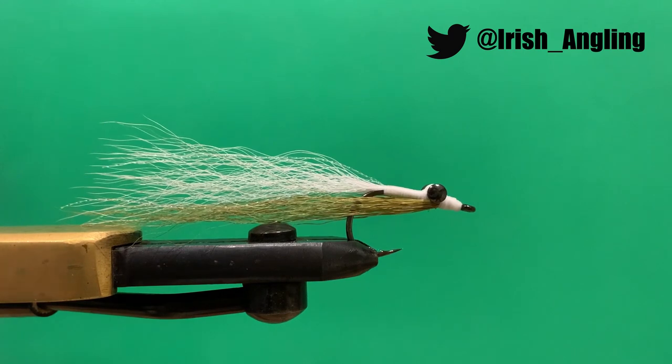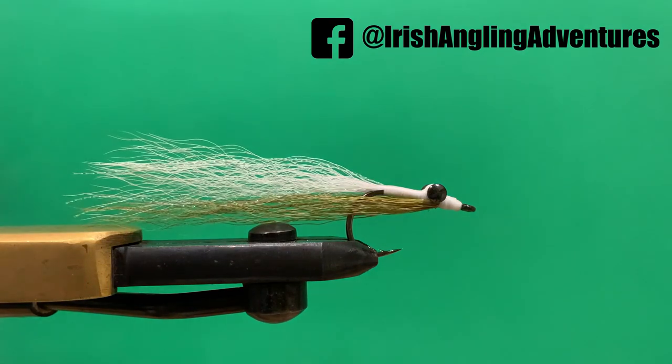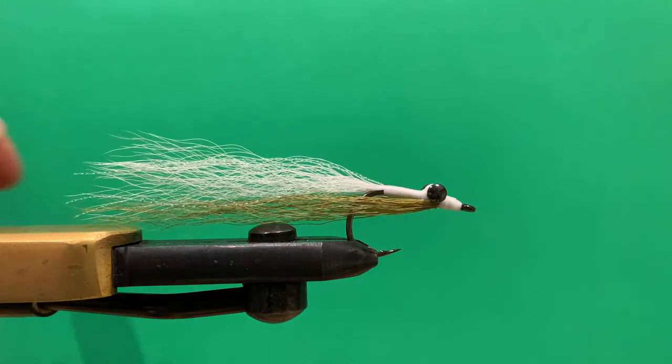This is a brilliant fly here in Ireland for sea trout, bass, and mainly for pollock. This would be my go-to pollock fly. It's a very heavy fly so it sinks quick, making it ideal for targeting pollock in deeper water.